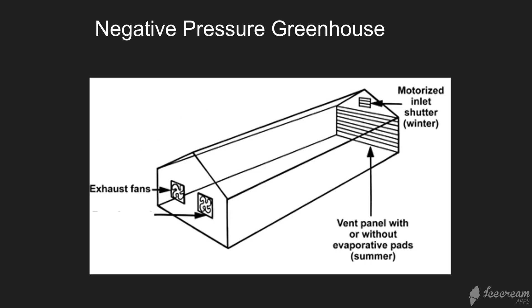Another option is a negative pressure greenhouse, where the exhaust fans on the near end of the greenhouse pull air out, creating a negative pressure inside that draws air in through the far wall. If the external air is a little bit cooler than the internal air, this will obviously cool the internal environment.